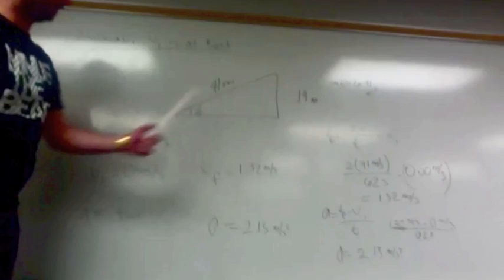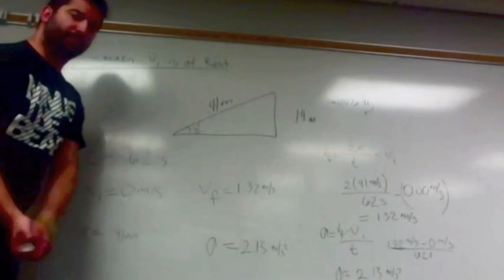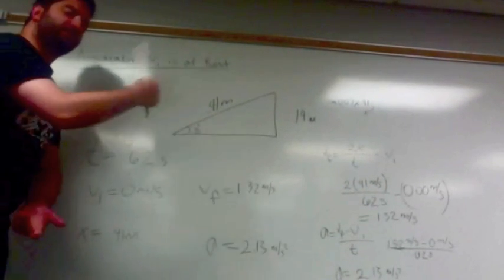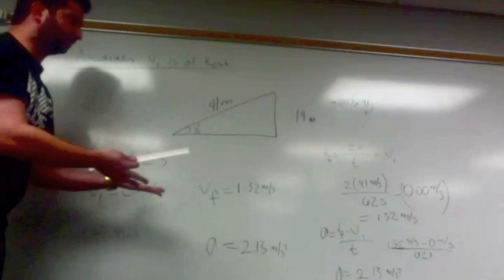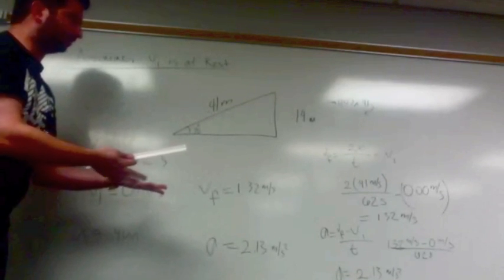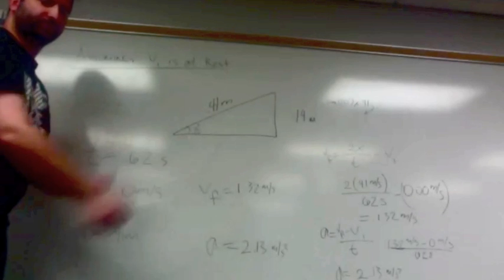We plug it into the kinematic equation to figure out acceleration. The acceleration going down the ramp is 2.13 meters per second. The following ramp is also the same, all the same calculations just in a different direction.